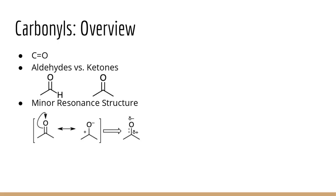Carbonyl refers to the C double bond O functional group. We have two major types: aldehydes, which have a hydrogen on the carbonyl carbon, and ketones, which have two R groups on the carbonyl carbon. There's also a minor resonance structure for carbonyls — since oxygen is electronegative, the double bond can flip onto the oxygen, giving it a delta minus charge and leaving the carbonyl carbon with a delta positive charge.